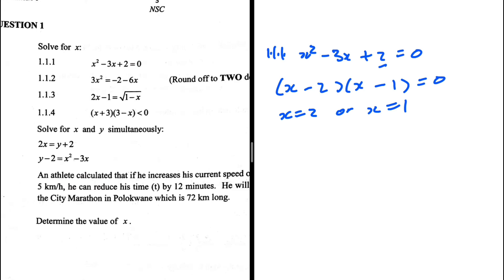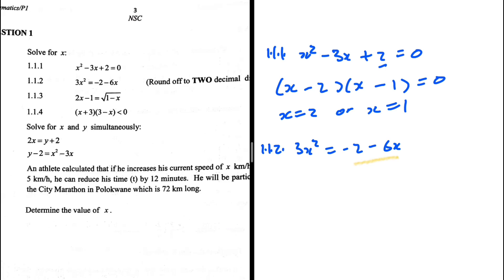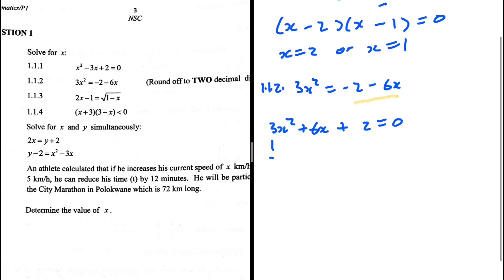Let's take a look at 1.1.2. We have 3x squared equals minus 2 minus 6x. We're supposed to round off our answer to two decimal places. We are going to use the quadratic formula, but we still need to take minus 2 and minus 6x to the left-hand side, giving us 3x squared plus 6x plus 2 equals 0. It should be easy to see that a is 3, b is 6, and c is 2.